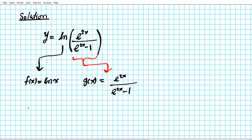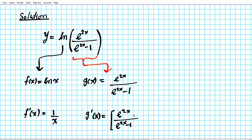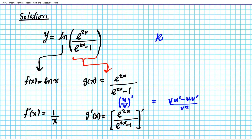We're going to apply the chain rule, so we're going to differentiate both functions. The derivative of f — f prime of x — remember the derivative of ln x is 1 over x. Then we're going to differentiate g of x, so g prime of x is going to be the derivative of e to the 2x divided by e to the 2x minus 1. We need to use the quotient rule: u over v prime is given by v·u prime minus u·v prime, divided by v squared.